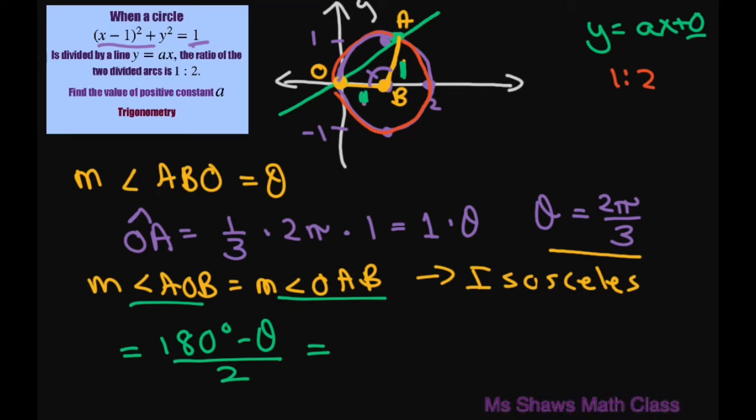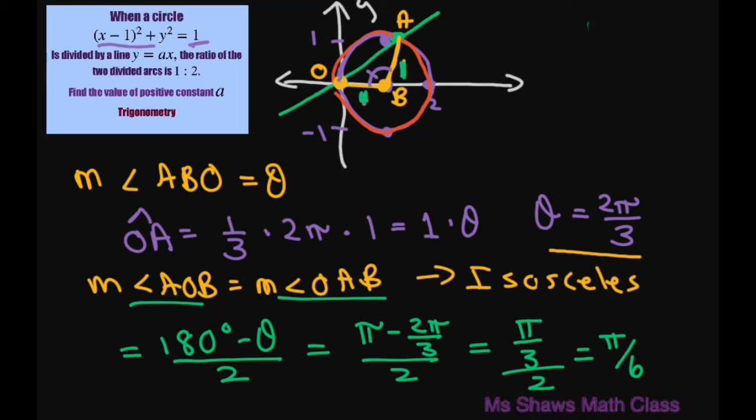That's going to be (π - 2π/3)/2. This gives you π/3 in the numerator, and then divided by 2, which gives you π/6.